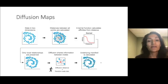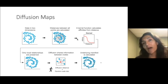Here are diffusion maps in a snapshot. We have data in ambient dimensions. We then compute pairwise distances. We pass those distances pointwise through a kernel function that gives us affinities.